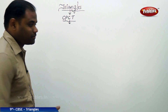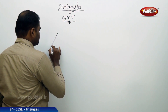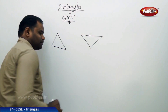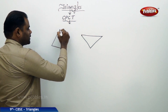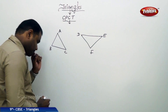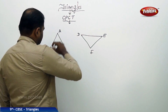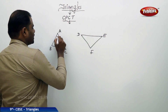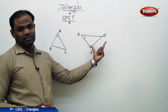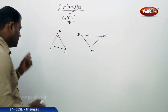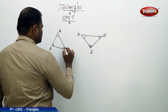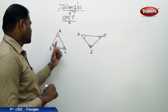Before we understand this, let me take two triangles. I have two triangles: the first triangle I'll denote by ABC and the second triangle I'll denote by DEF. Let me say this angle corresponds to this angle — angle A corresponds to angle D, which means both angles are equal. Then angle B equals angle E and angle C equals angle F. So clearly the corresponding angles are equal.